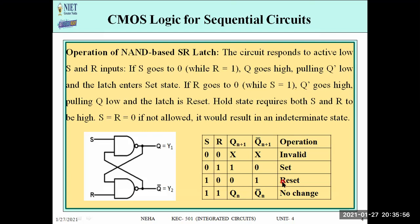The hold state occurs when S=1, R=1, because then the output is the previous value Qn — meaning the value is held. The invalid or indeterminate state occurs when both inputs are 0. When we give both inputs as 0, it is an invalid operation — an invalid state. This is how we explain the SR latch, whose working you have already known.